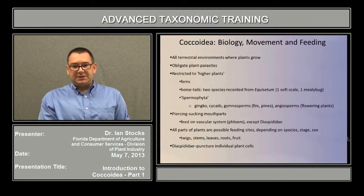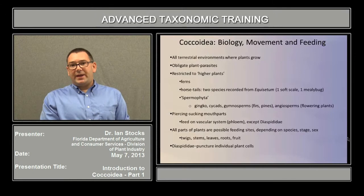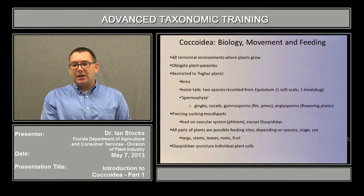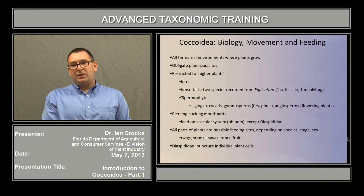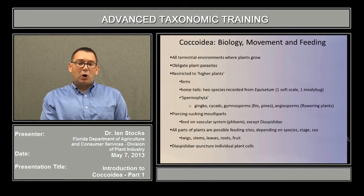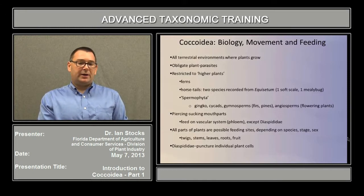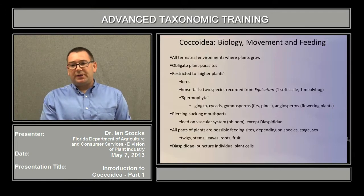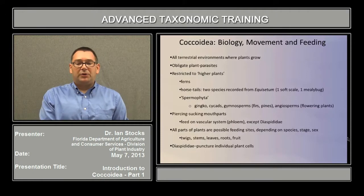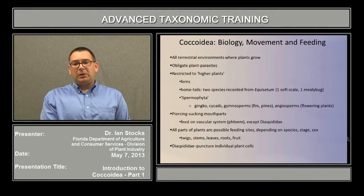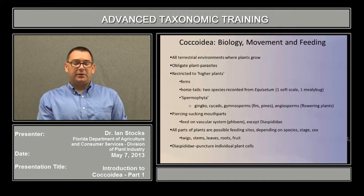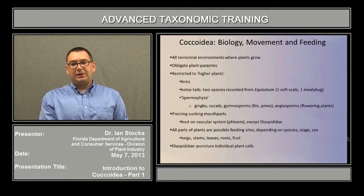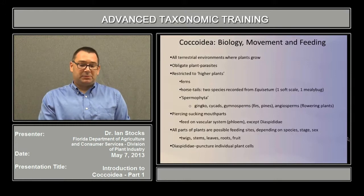All of these insects have piercing, sucking mouthparts, by which they feed on the vascular system of the plant — the phloem, which is the delivery system for water and photosynthates that the plant is moving. This is except for the Diaspididae, the armored scales. In the armored scales, they actually puncture individual plant cells with their mouthparts and probe around in that cellular layer, draining the contents of those cells. This is one of the things that leads to the distinctive chlorosis of armored scale feeding. All parts of the plants are possible feeding sites, though it can depend somewhat on what species, stage, or sex is involved. So things like the twigs, stems, leaves, roots, and fruit are all possible host sites.